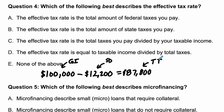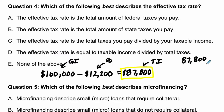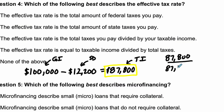Why am I telling you all this? Because the effective tax rate has to deal with the ratio of how much you're paying in taxes over your taxable income. So for example, let's say you're paying a really high tax rate. Your taxable income is $87,800, and the federal government says we're going to charge you $87,800 in taxes on your taxable income of $87,800. This would be a 100% effective tax rate, called ETR.